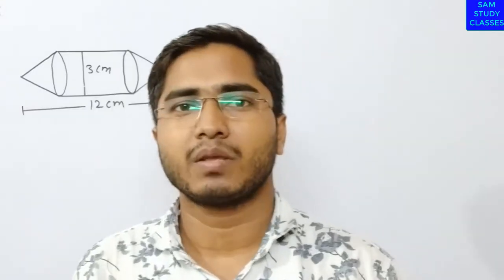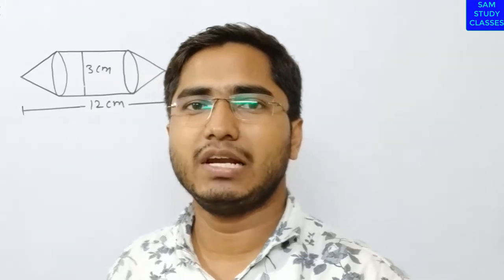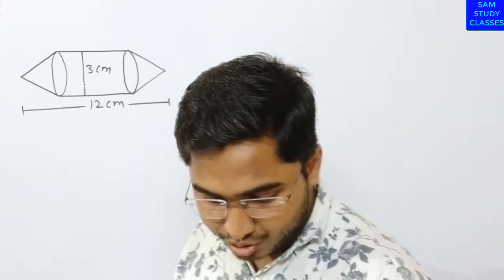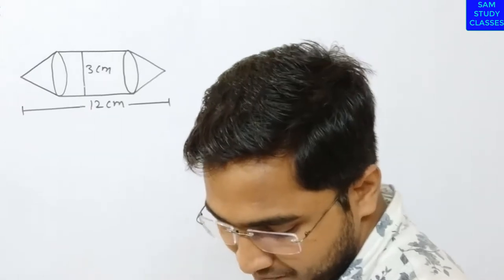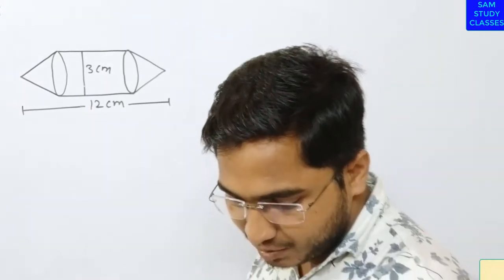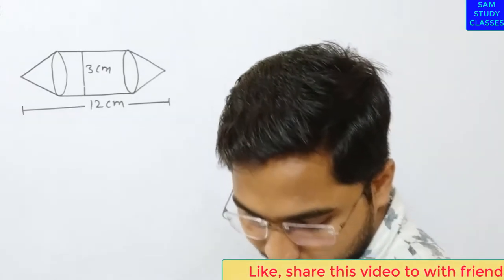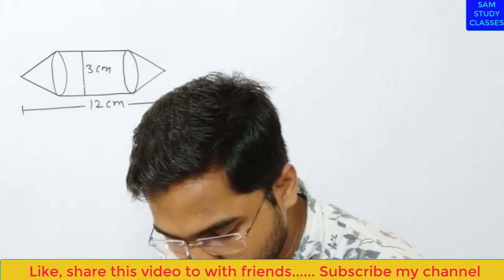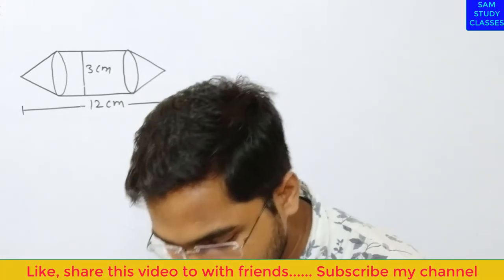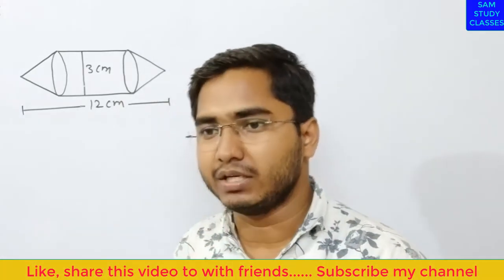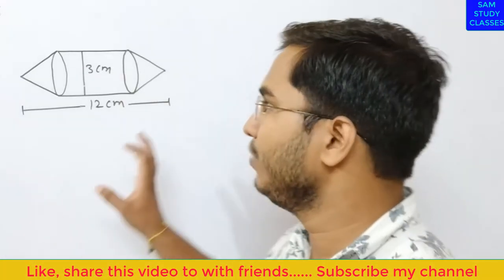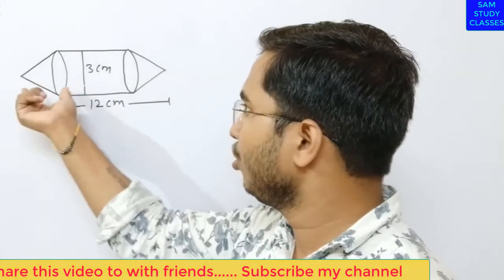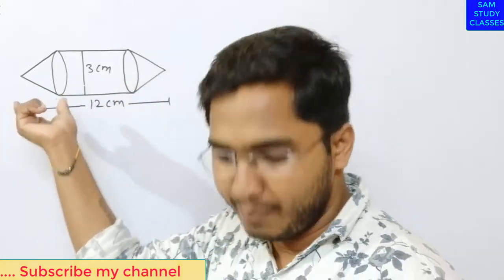Question number two. Rachel, an engineering student, was asked to make a model shaped like a cylinder with a cone attached at its two ends, using thin aluminum sheet. This model is made with the two ends in a conical shape.